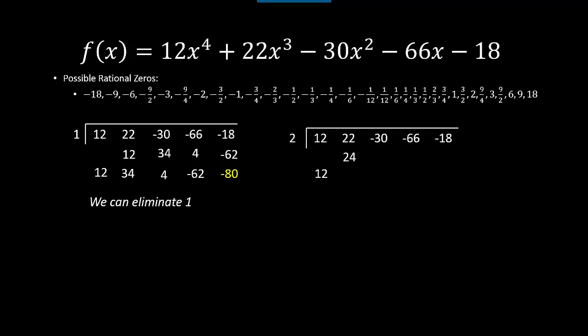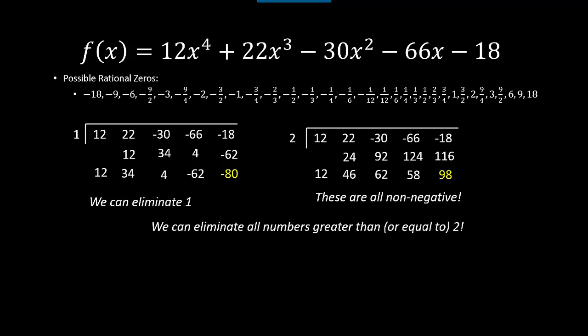Now I'll try 2. Synthetic division gives a remainder of 98, so 2 is also not a zero. But notice the bottom row here consists of all positive (non-negative) numbers. That means we can eliminate anything on our list greater than 2, and we can also exclude 2 itself. I've done synthetic division twice but eliminated 8 values off the list — getting more for your money with synthetic division.